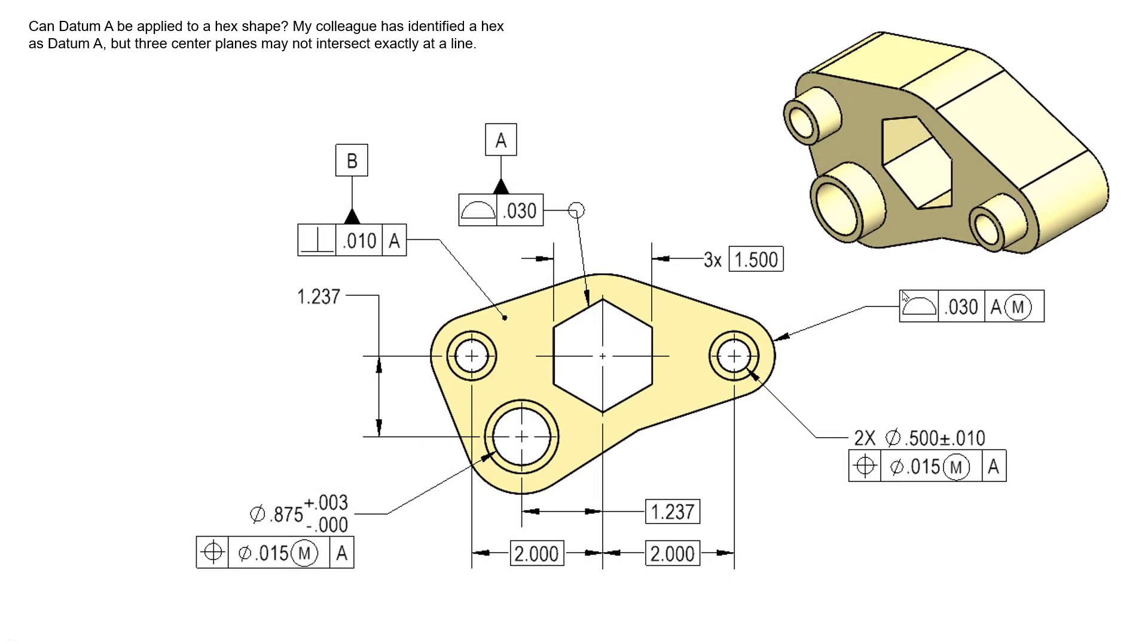But in this scenario, the drawing that we've created here, we're going to utilize datum feature A as the primary datum feature. And as you can see, we've identified datum feature A as this hexagon shape right here.